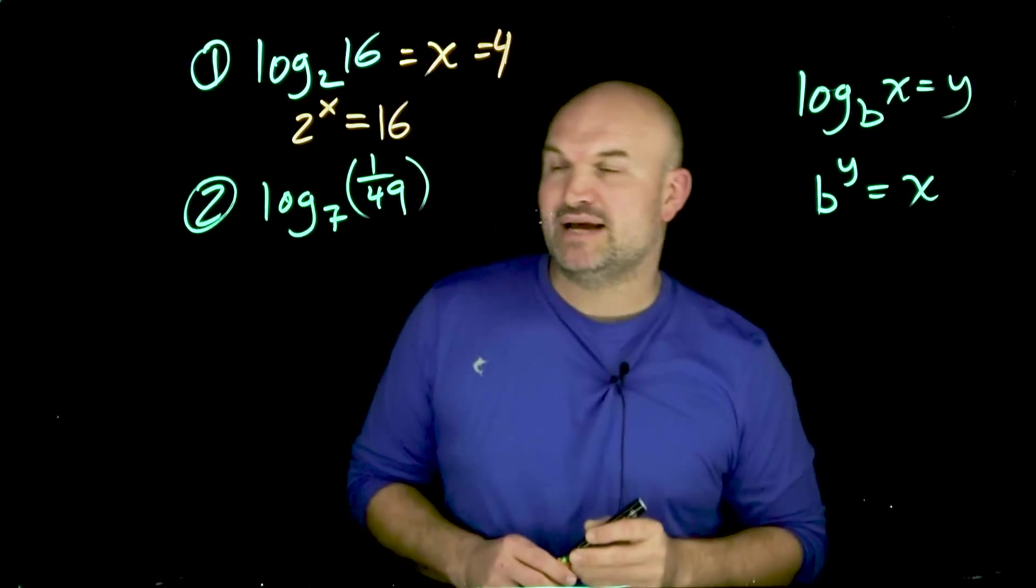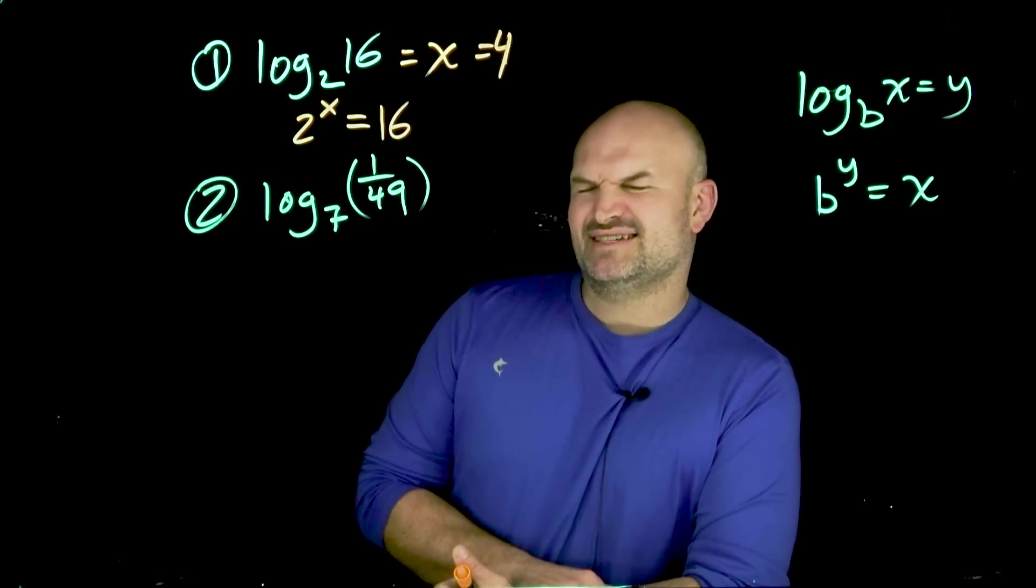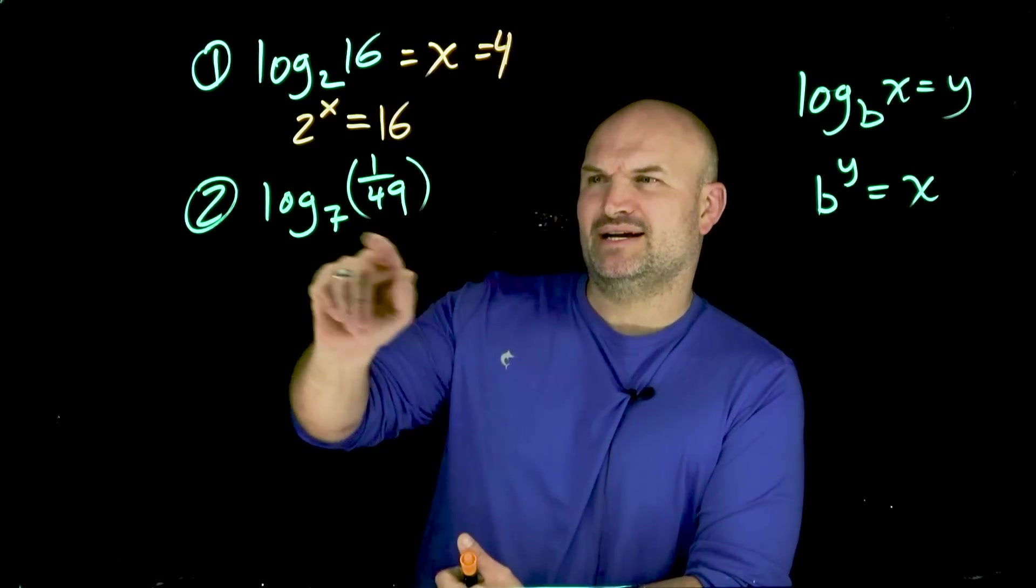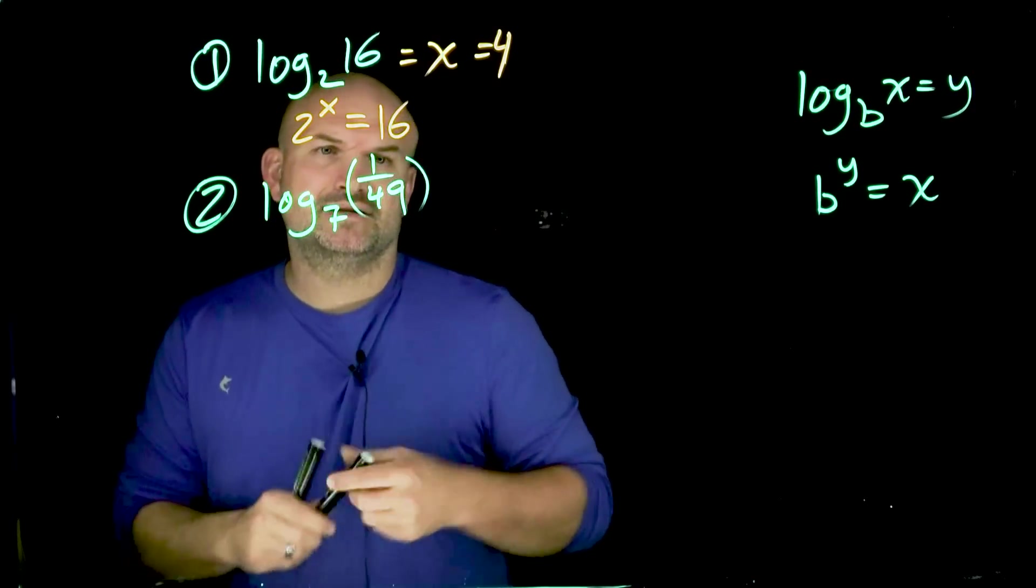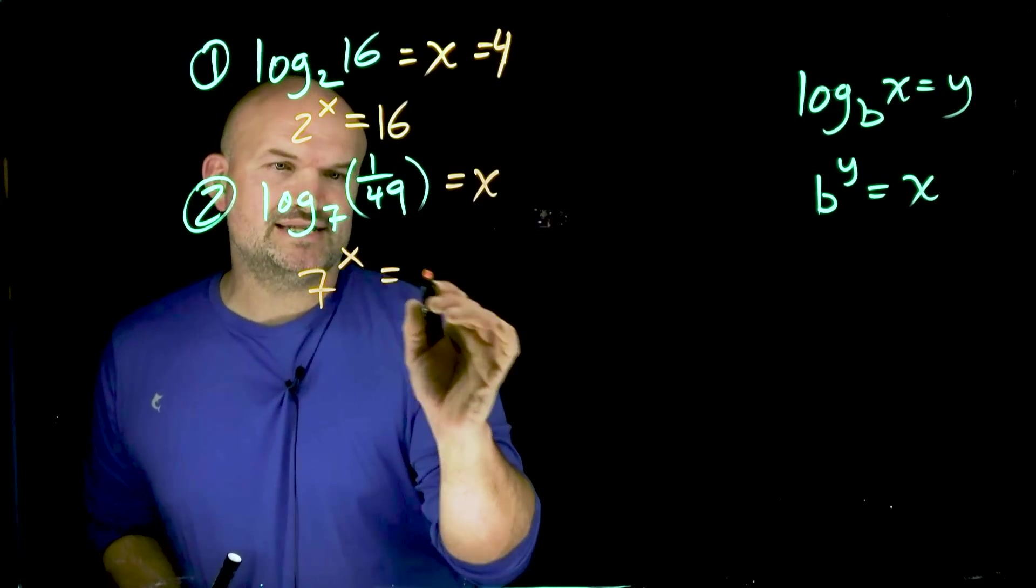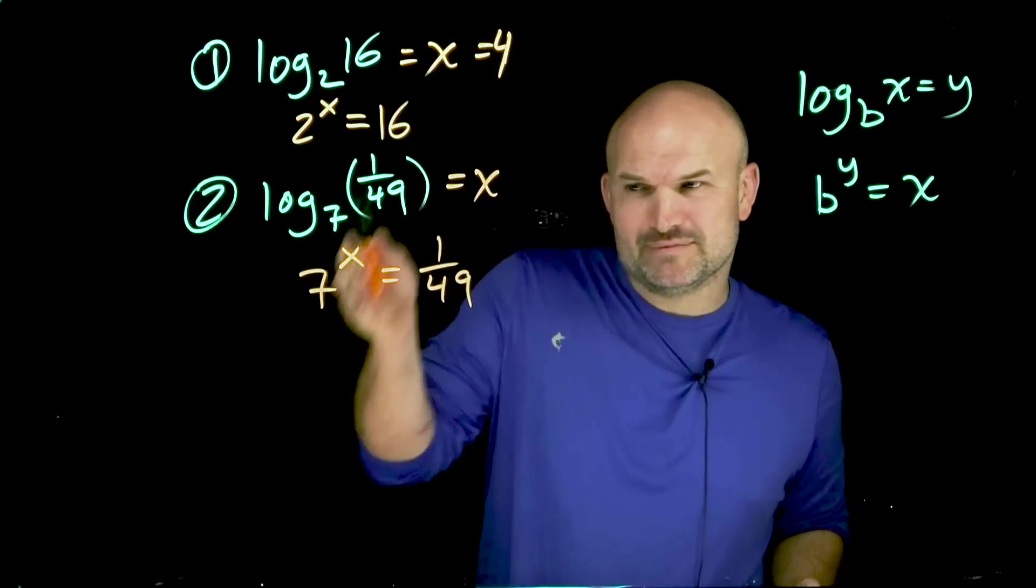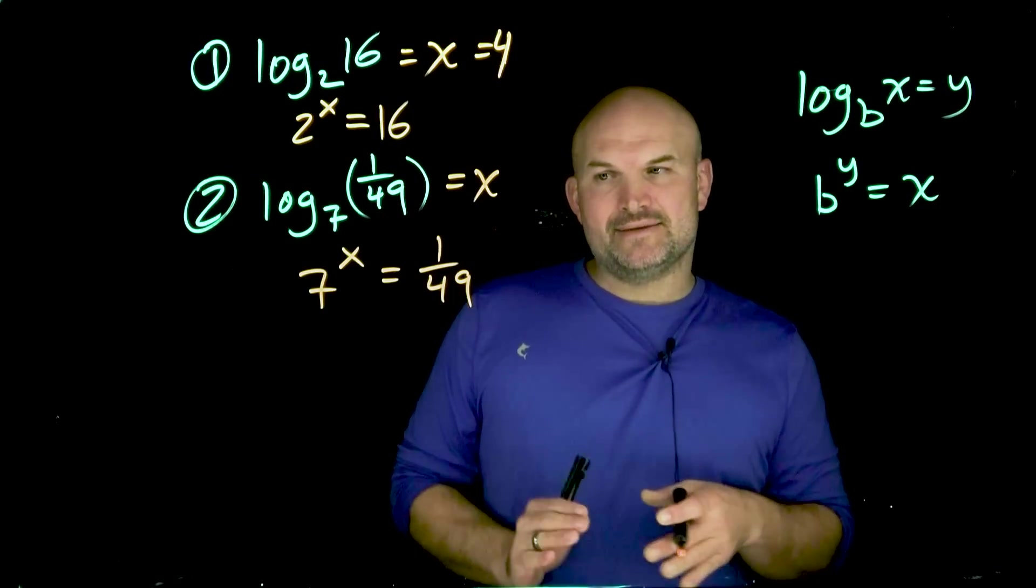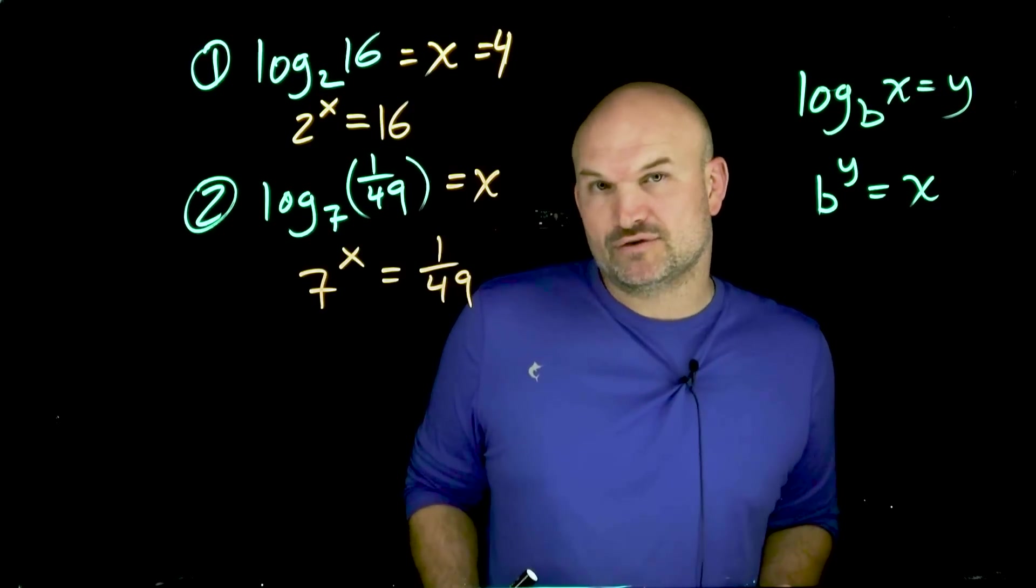Now we have log base 7 of a fraction, 1 over 49. This is sometimes confusing because now hopefully you recognize, like, 7 raised to what? Let's set this equal to x and say, 7 raised to what number is equal to 1 over 49? That gets kind of confusing. How do I go from 7 to a fraction? So now we can manipulate our 1 over 49 to make it look like 7 raised to x, so therefore I can use my inverse operations.